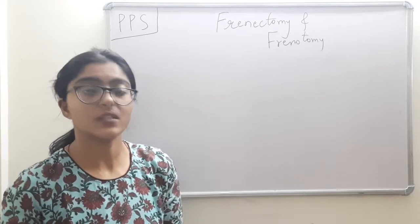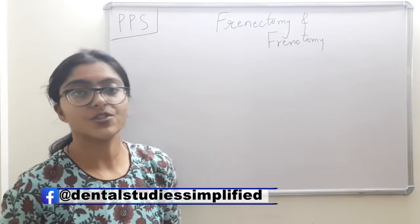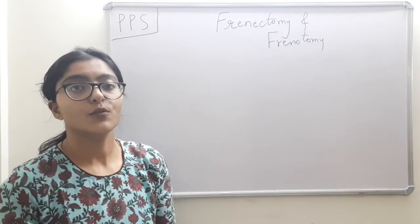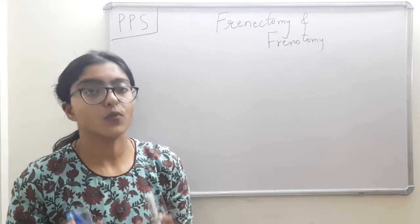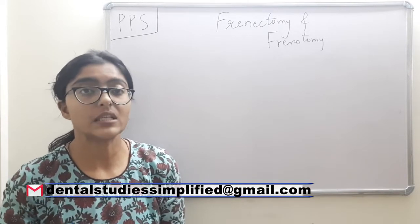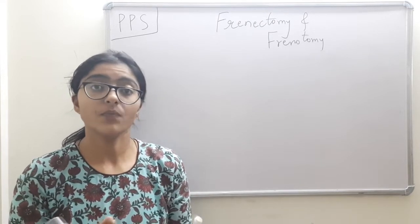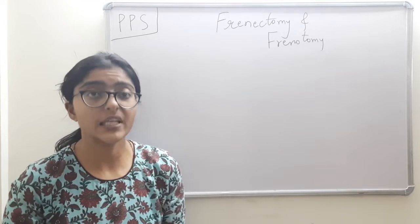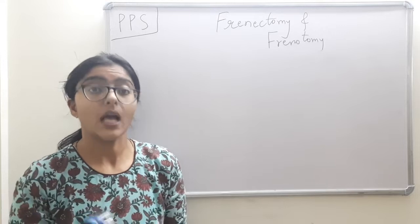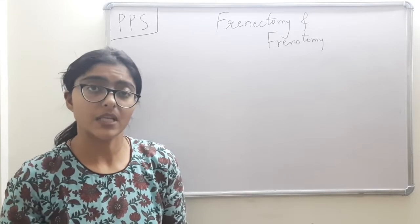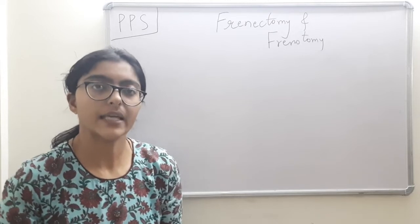For today's video, the topic is problems with aberrant frenum and its treatment options: frenectomy and frenotomy. A frenum is a fold of mucous membrane with underlying muscular attachments. It attaches the lips and cheeks to the alveolar mucosa — primarily to the alveolar mucosa, but sometimes to the gingiva and the underlying periosteum.